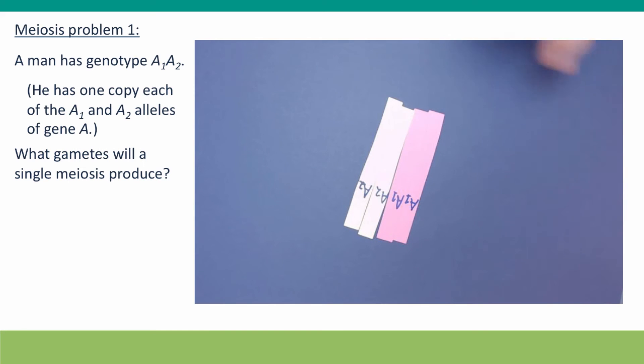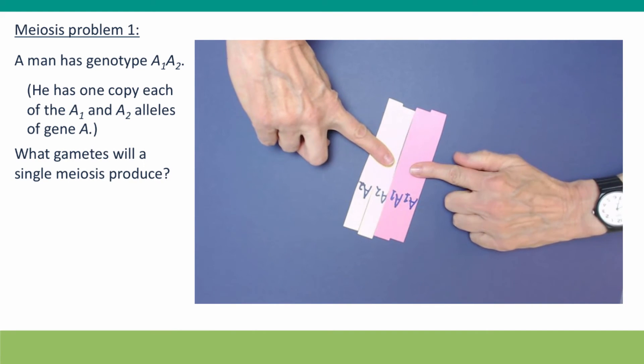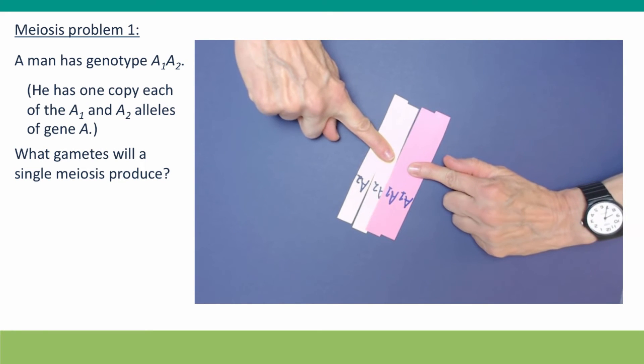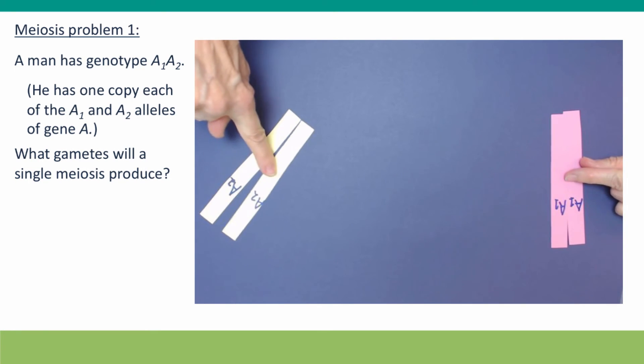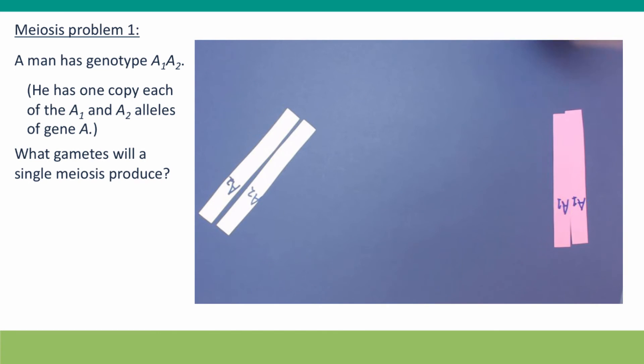Separation of the homologues is just like separation of sister chromatids in mitosis. Each homologue, consisting of two sisters, is pulled to the poles of the cell. And the cell divides—that's the end of meiosis I.